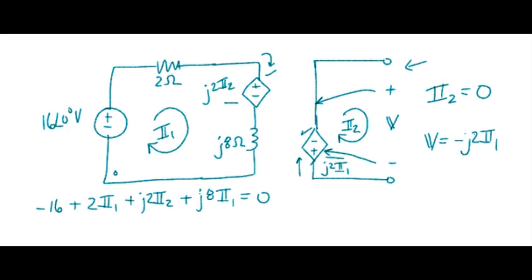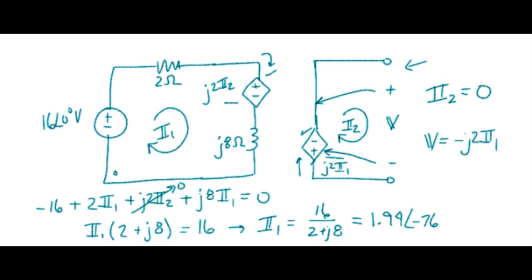But earlier we noted that I2 is zero, so that part vanishes. And collecting terms, we have a 2 and a J8 associated with I1, and put 16 on the other side of the equation. So I1 is 16 over 2 plus J8, which is 1.94 at minus 76 degrees amps.